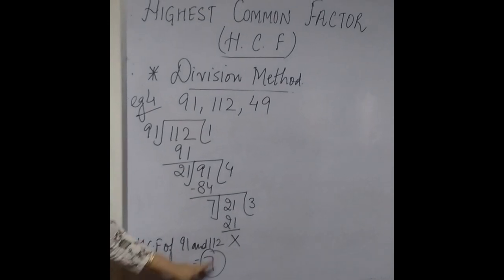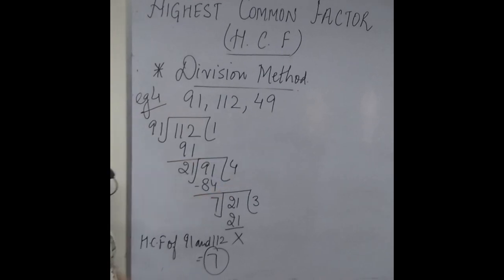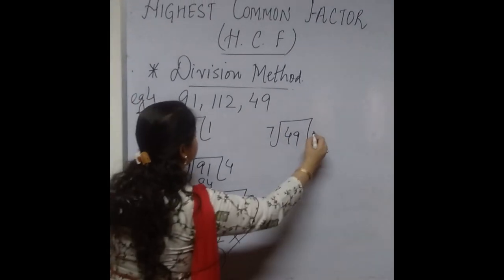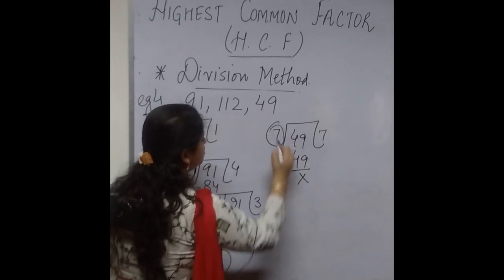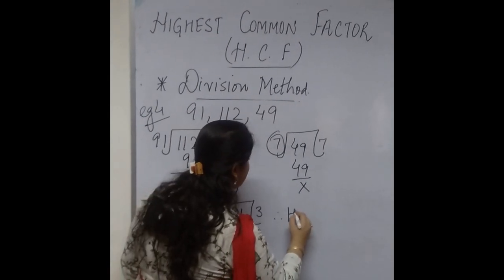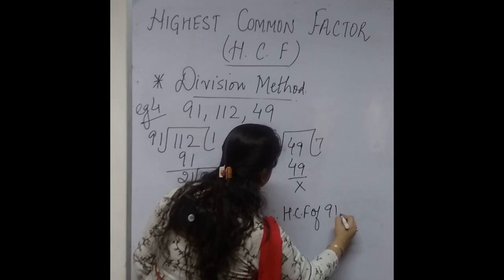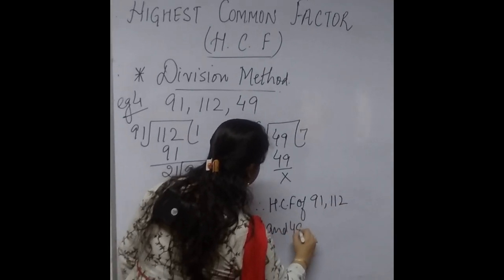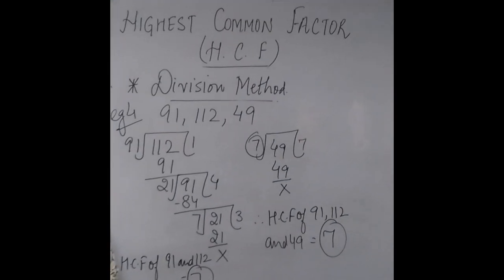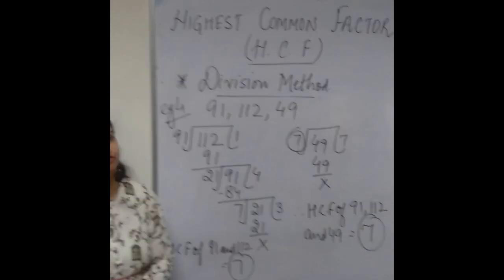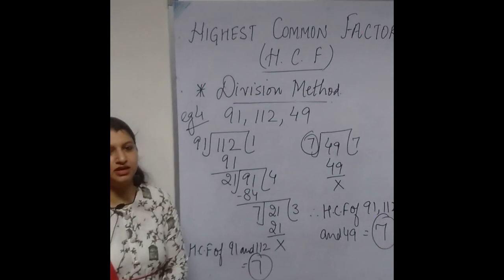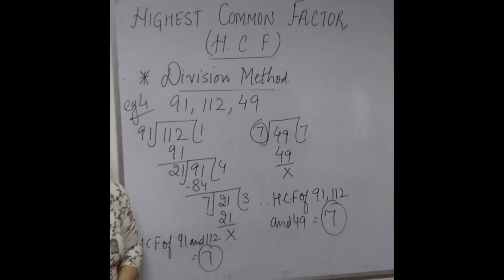Now this HCF will be used to divide the leftover third number, which is 49. So we carry out division of 49 and 7 — 49 becomes the dividend and 7 becomes the divisor. 7 times 7 is 49, and the remainder is 0. The divisor that gives remainder 0 is the HCF. Therefore, HCF of 91, 112, and 49 is 7. So children, here you have learnt how to find the HCF using two methods — the factor method and the division method.